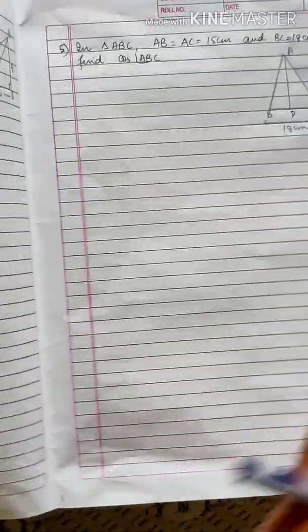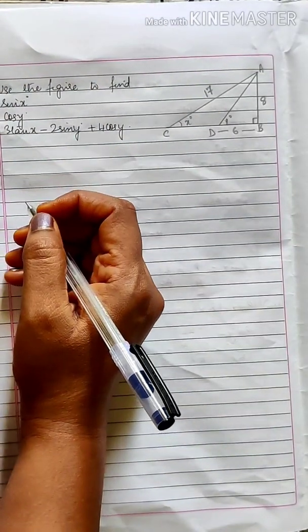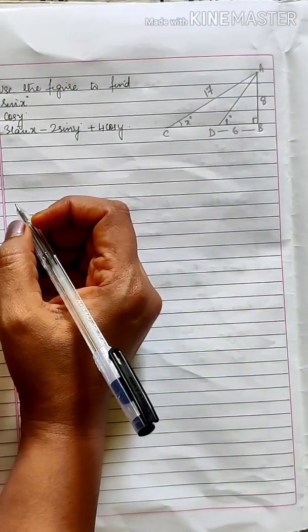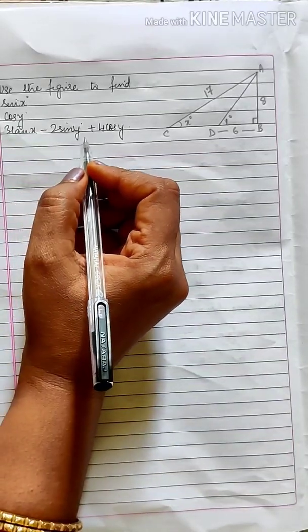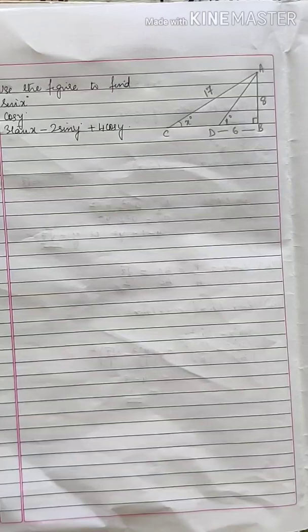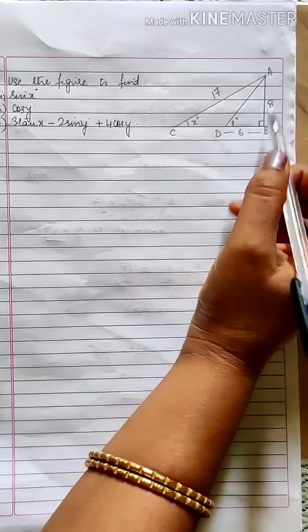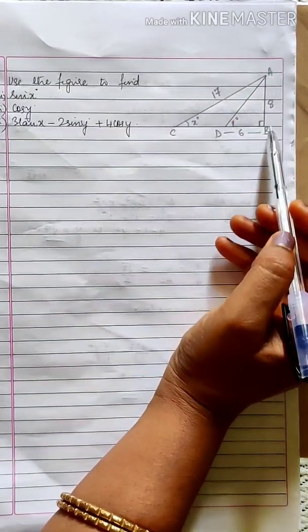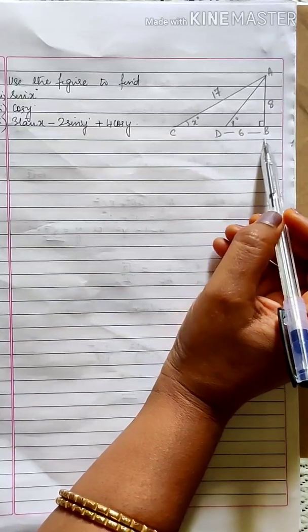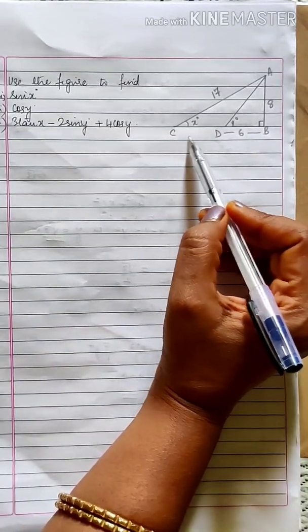Moving on to the next sum: use the figure to find sin x, cos y, and 3 tan x minus 2 sin y plus 4 cos y. Here you have a triangle ABC where AC is 17, AB is 8, and DB is 6.